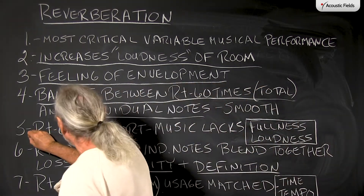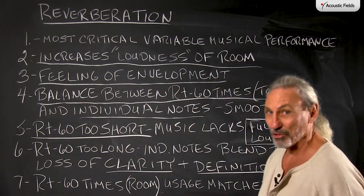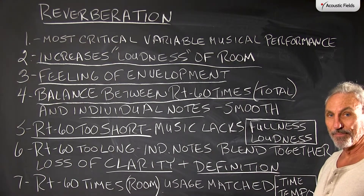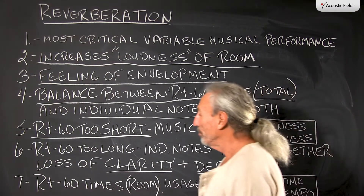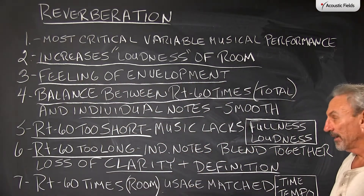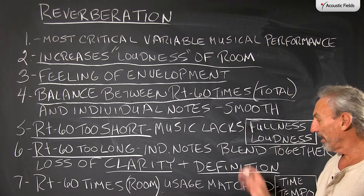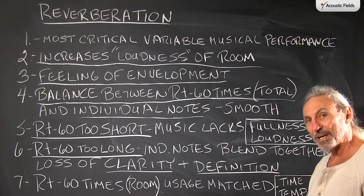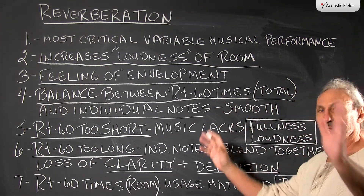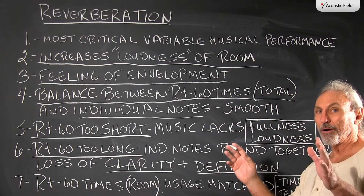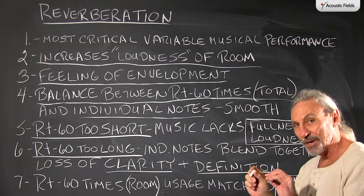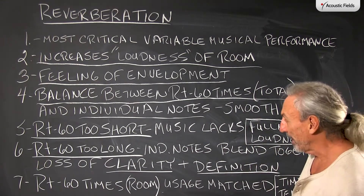If you don't do that correctly and the RT60 is too short, the music lacks fullness and loudness. If it's too long, individual notes blend together and you get a loss of clarity and definition. So it's a delicate balancing act between the total time signatures of all the fundamentals and harmonics, the distance between each fundamental and harmonic — and those time signatures have to match.